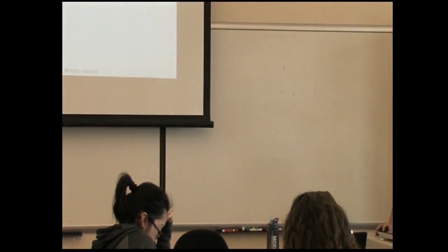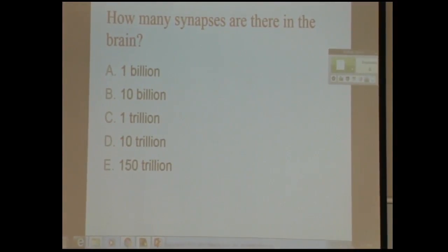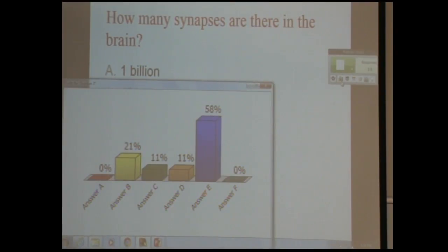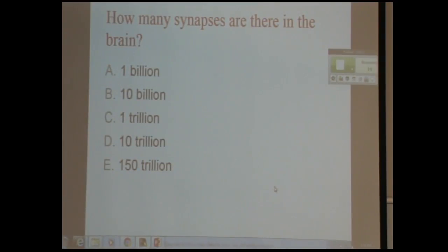So how many synapses do you think there are in the brain? How many neuron-to-neuron connections are there? And as you know, you always choose the biggest number on these questions, right? And you'd be right, it is E. So there's 150 trillion connections between nerves in your brain, estimated.